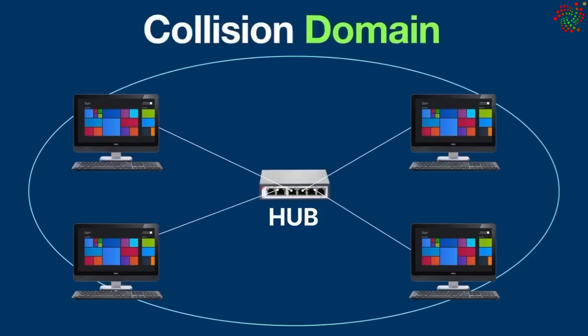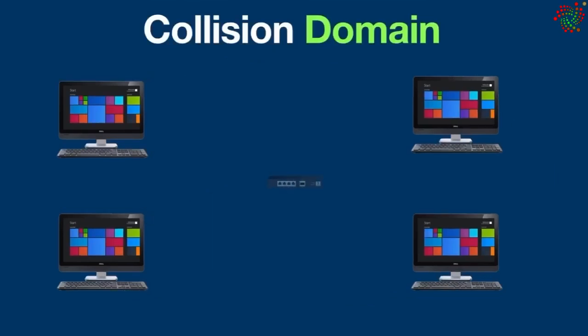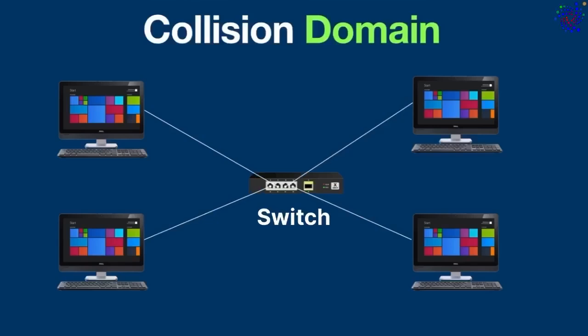Instead of having one large collision domain, what if we eliminate the chance of having collisions by breaking it down into smaller collision domains? For this purpose, switches were created. Because a switch is more intelligent than a hub, it doesn't forward the data packet to all its ports — it only forwards the data to the intended destination port.